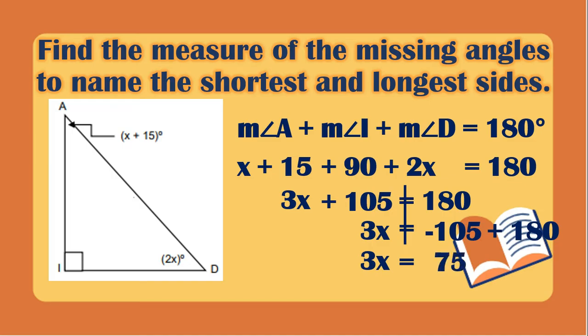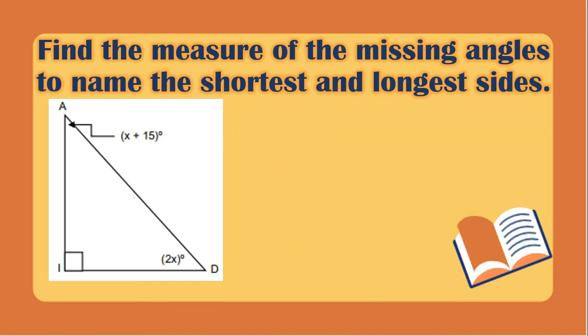To get the value of x we divide both sides by 3. So 3x divided by 3 is x, and 75 divided by 3 is 25. The value of x is 25.